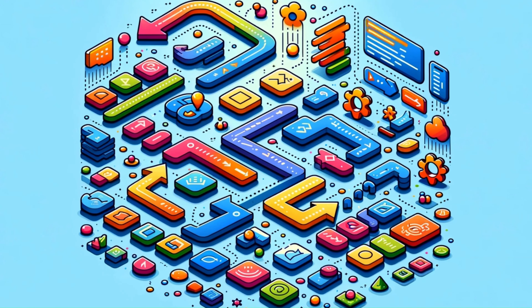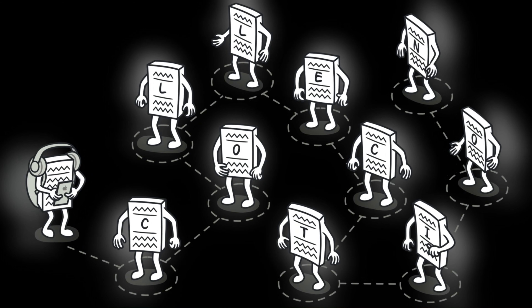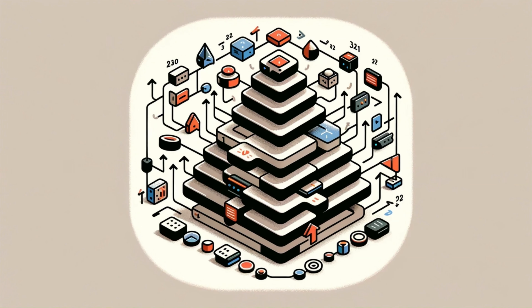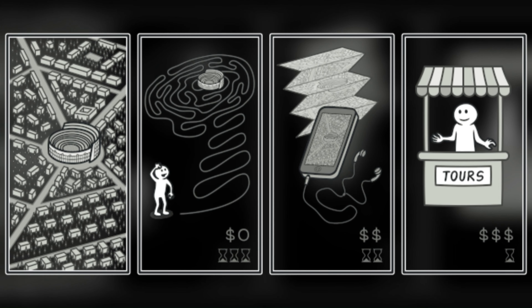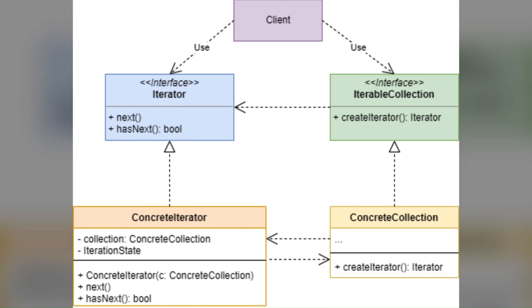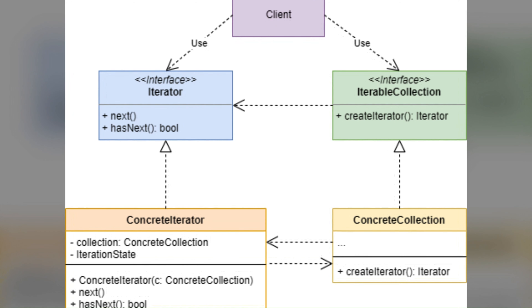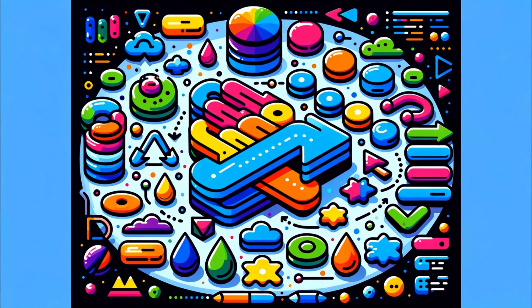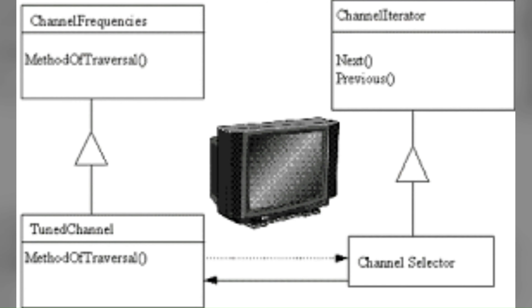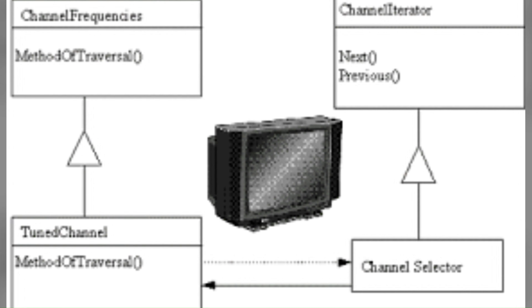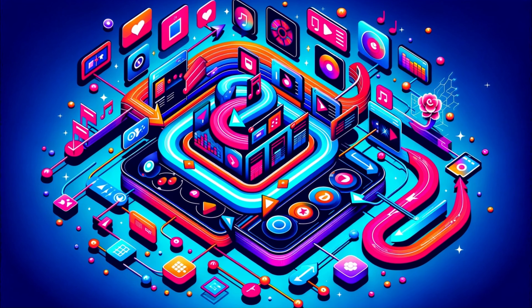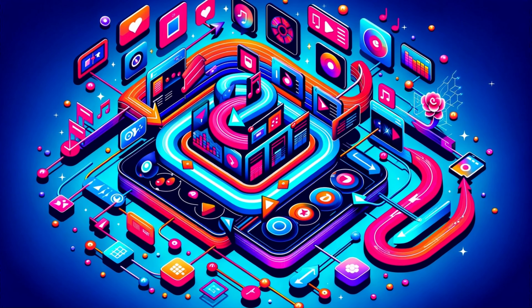The Iterator pattern provides a way to access elements of an aggregate object sequentially without exposing its underlying representation. Think of it like flipping through the pages of a book — you go through page by page without needing to understand the internal structure. In software, an iterator can be used to traverse a collection like a list or tree, going through customer records without the client needing to know how the list is structured or stored.